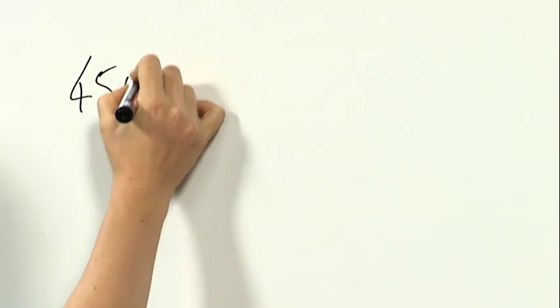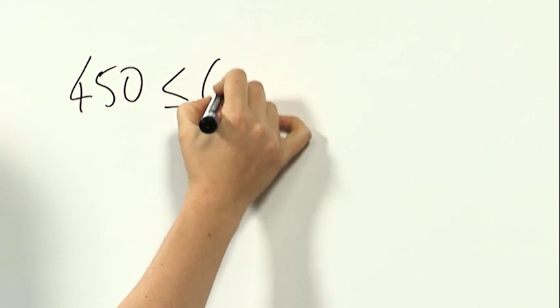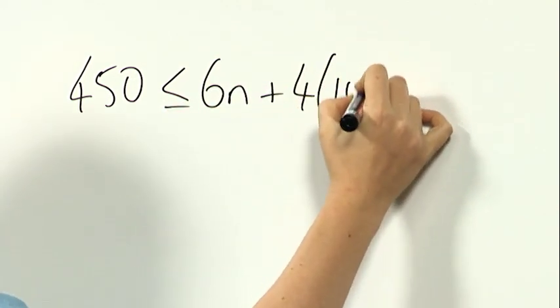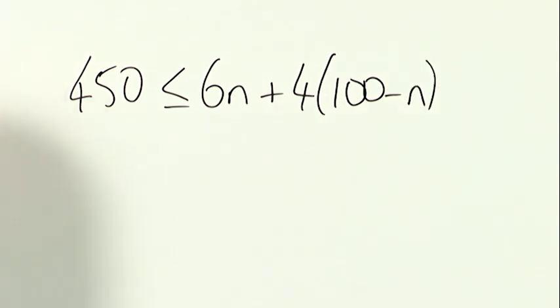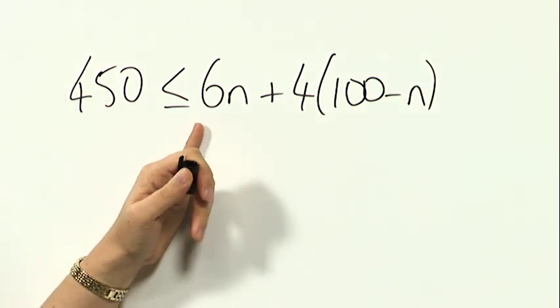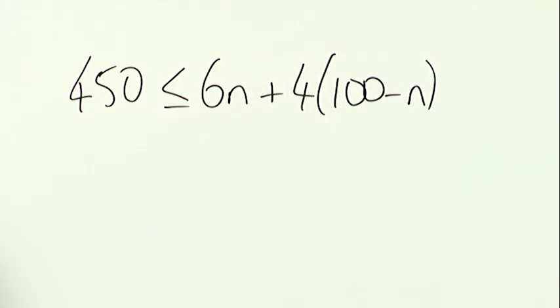So 450 is less than or equal to 6n plus 4 times (100 minus n). Remember we've got 450 fish to use up. We can use up to 6 for each good day and up to 4 for each bad day.